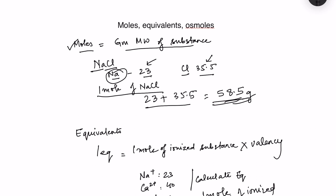Remember that one mole of any substance contains 6 × 10²³ molecules of that substance — that is Avogadro's number.